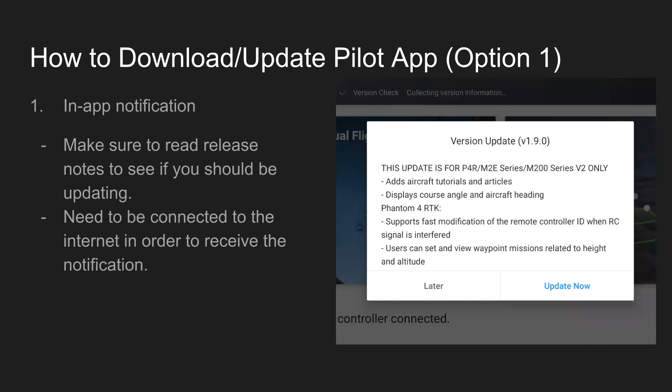First, what I talked about here is just in the Pilot app itself. When you open it up, if you're connected to the Internet, you're going to have release notes pop up asking you to update the DJI Pilot app. You can see on the first line there it says clearly this update is for P4R, Phantom 4 RTK, M2E series, M200 series V2 only. So you'd only want to update if you're using, in this case, the CrystalSky with those devices. Otherwise, you can just say later and ignore the update notification.